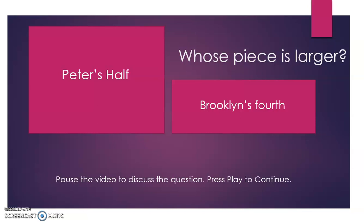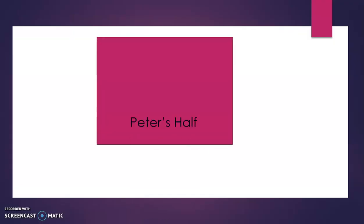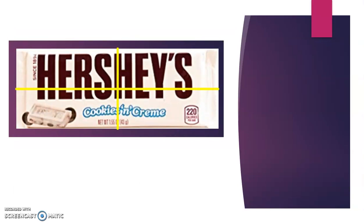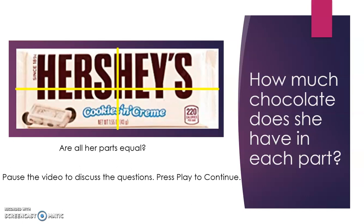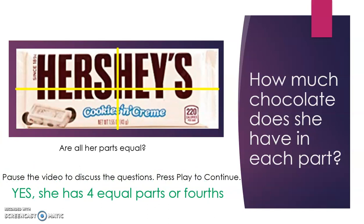Pause the video to discuss, then press play. That's right — Peter's half is larger. Let's look at Brooklyn's chocolate pieces again. Are all of her parts equal? How much chocolate does she have in each part? Pause and discuss, then press play. If you said yes, you're right — she does have equal parts. She has four equal parts, or fourths.